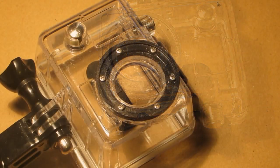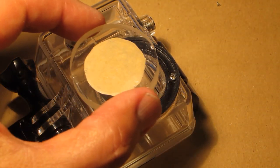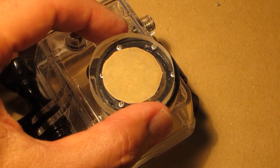I've wiped off the excess silicone. Now I'm going to apply silicone on the flat camera case lens.